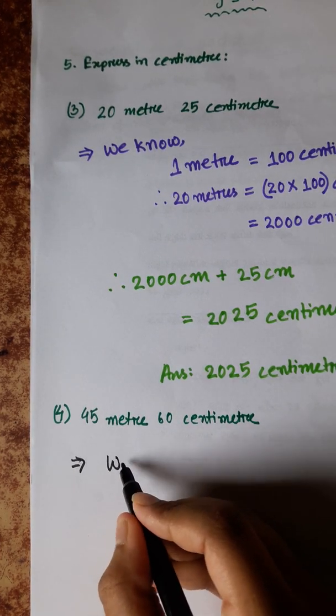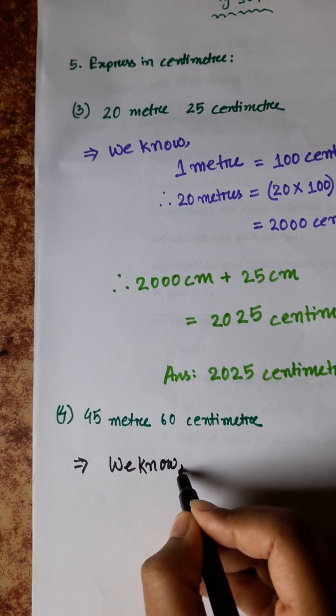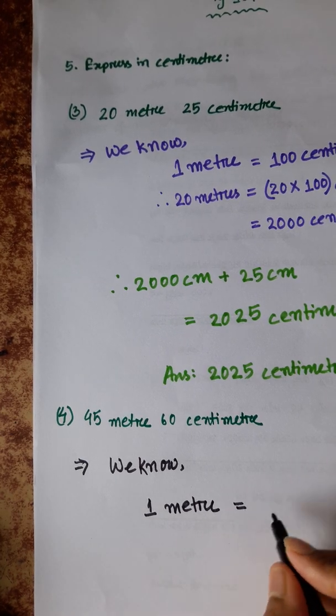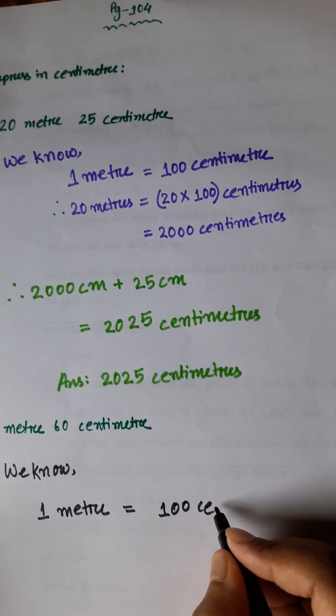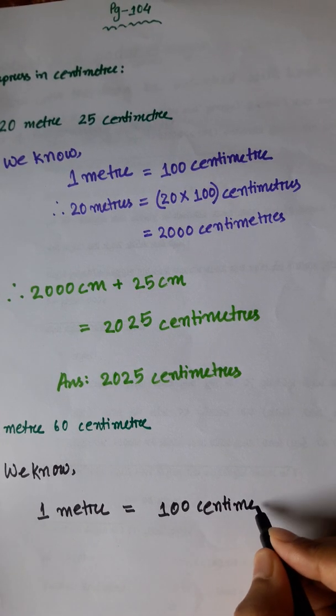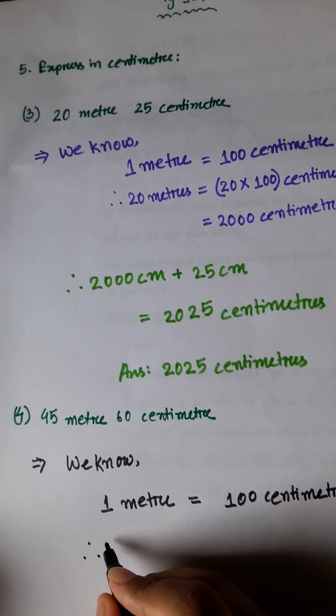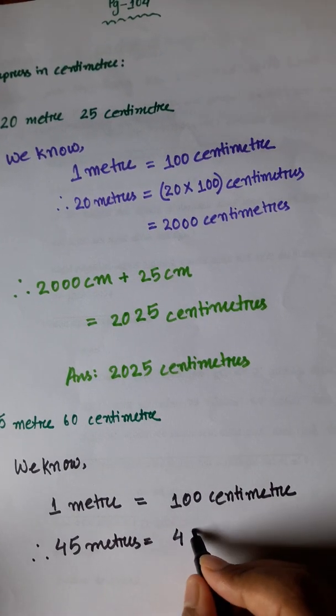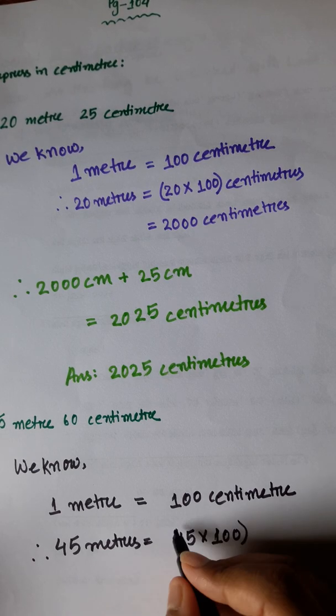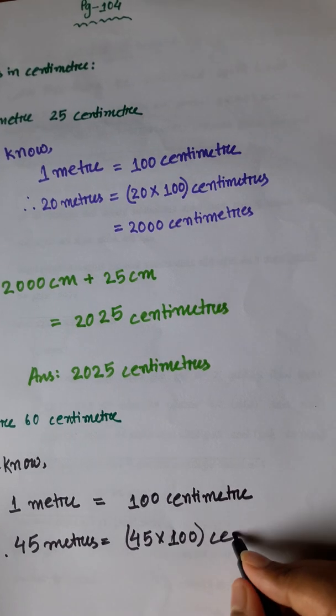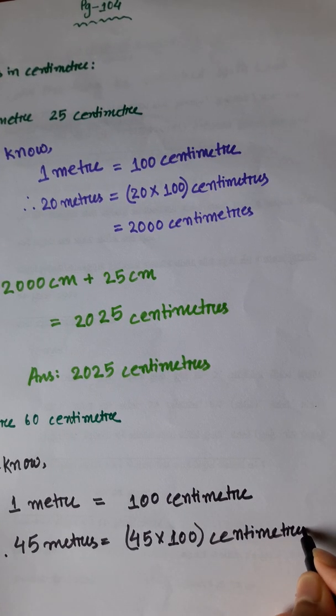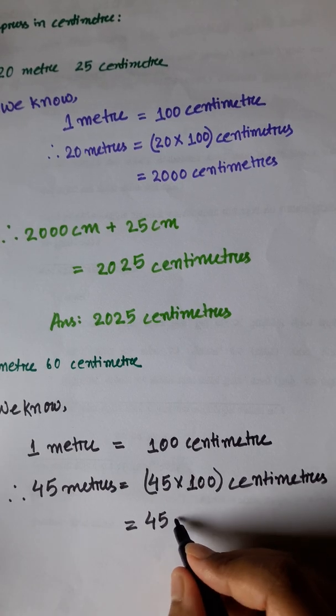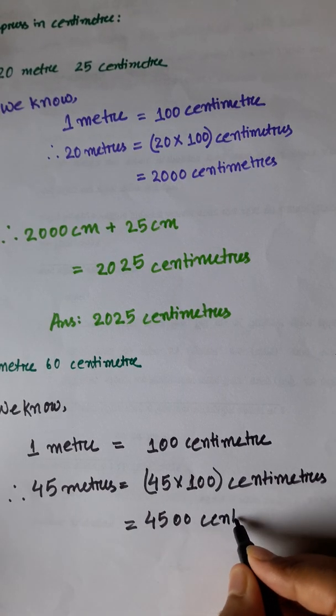Similarly we will write, we know 1 meter is equal to 100 centimeter. So 45 meters is equal to 45 into 100 centimeters. Now we will write down the multiplicand and the rest of the zeros behind 1, which is 4500 centimeters.